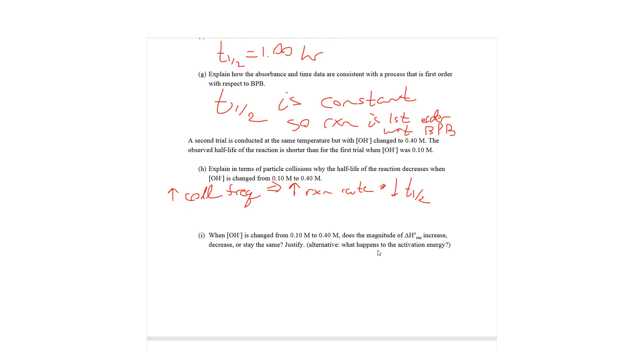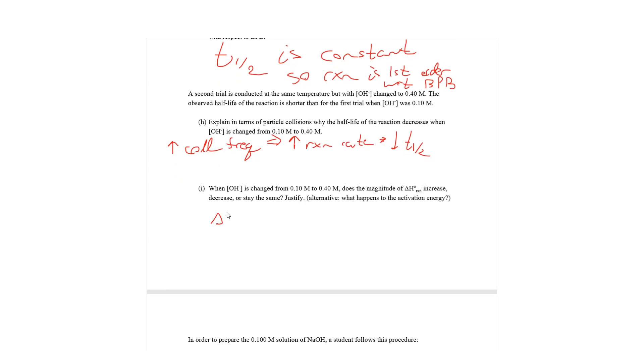It says, when OH is changed from 0.1 molar to 0.4 molar, does the magnitude of delta H reaction increase, decrease, or stay the same? So, delta H reaction, the enthalpy of a reaction, this stays the same. And the reason why is because this is reaction-specific. All that matters is the chemical profiles of the chemical species inside whatever container they're reacting in. The concentration does not matter. And one of the hints there is the units for delta H reaction is energy per mole. So, because it's a per mole quantity, it doesn't really matter how many moles there are in the first place.